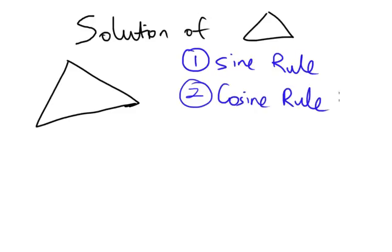From the sine rule, you know that we are going to use sine. From the cosine rule, it means we are going to use cos. That's very straightforward. But what is sine rule about? We will focus on sine rule first.